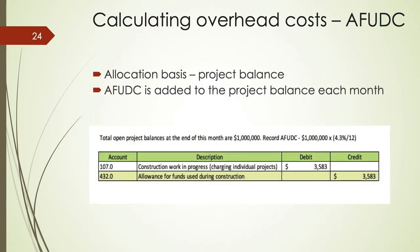The allocation basis for AFUDC is the project balance. Every month, AFUDC is added to the project balance. In our example, with open project balances of 1 million dollars at the end of the month, we record AFUDC as 1 million times 4.3% divided by 12. This is a debit to Construction Work in Progress, charging all individual projects a total of $3,583, and a credit to account 432 — the Allowance for Funds Used During Construction — for $3,583.